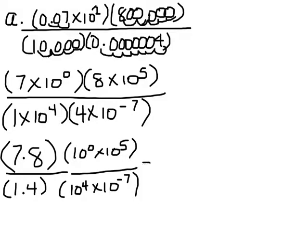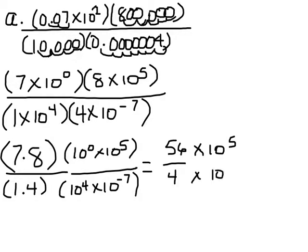So let's do the math. 7 times 8 is 56, and 1 times 4 is 4. Times 10 to the 5th, because 5 plus 0 is 5. And here 4 times 10 to the negative 3rd.